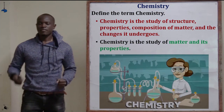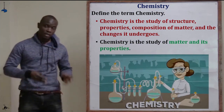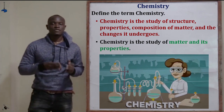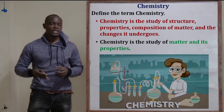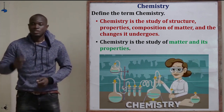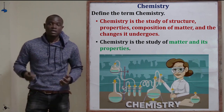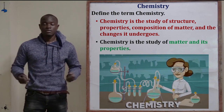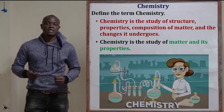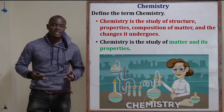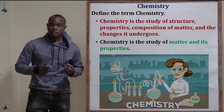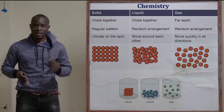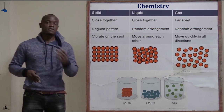The first question asks us to define the term chemistry. Chemistry is the study of structure, properties, and composition of matter and the changes that matter undergoes. That is the full definition of chemistry. The shorter definition is that chemistry is the study of matter and its properties.